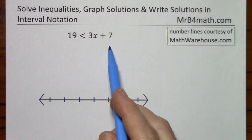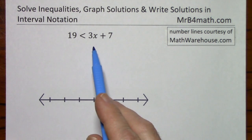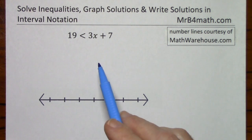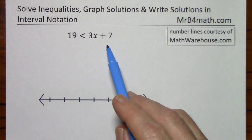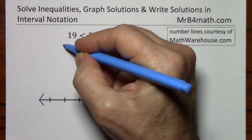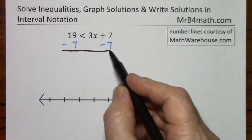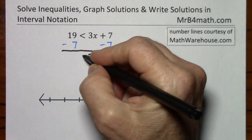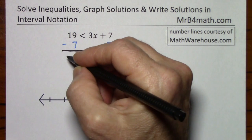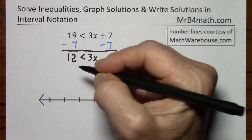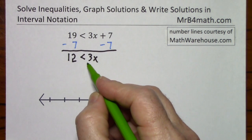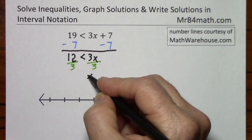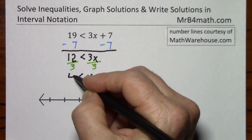For this algebraic inequality, I'm going to assume you'd be fairly comfortable solving it if it were an algebraic equation with an equal sign. So, as with algebraic equations, I'm trying to get x all by itself. Let's get rid of the 7 — that's a zero. Bringing down the 3x, the inequality sign, and 12. Now let's get rid of the 3; the opposite operation is division. This leaves us with x is greater than 4.